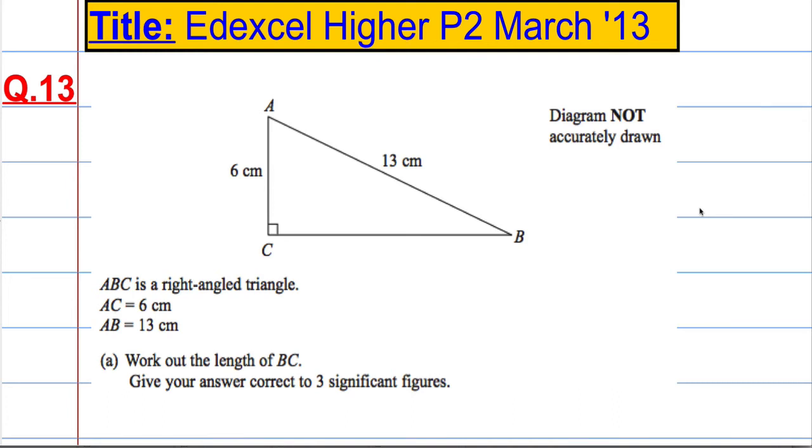Question 13. We have a right angle triangle ABC here and we're told that AC is 6 cm and AB is 13. We're asked to work out the length of BC correct to 3 significant figures.